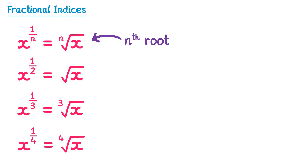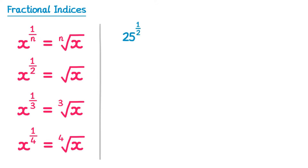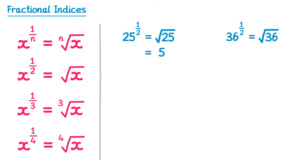Let's have a look at how you can do this with some actual numbers. If we start with 25 to the power 1 half, this means we need to do the square root of 25, which is 5. If you had 36 to the power 1 half, this is the square root of 36, which is 6.